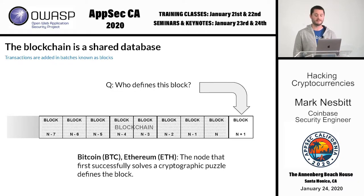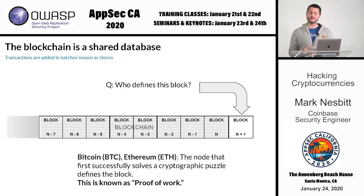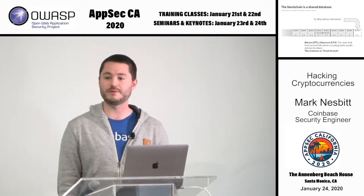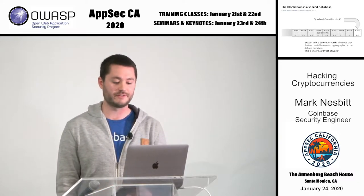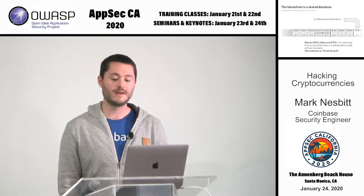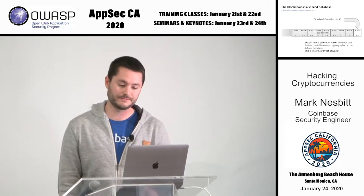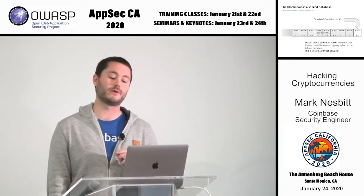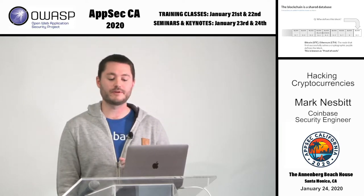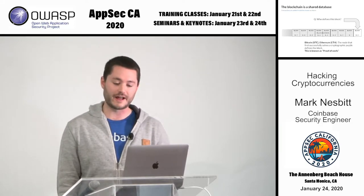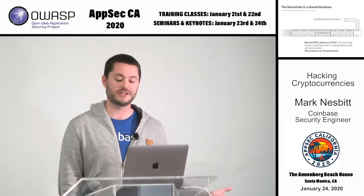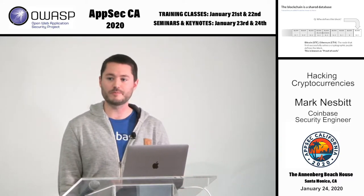And lastly, proof-of-work: Bitcoin and Ethereum. The node that first successfully solves a cryptographic puzzle defines the block. It's known as proof-of-work because the solution to this puzzle has to be brute forced, which takes considerable computational effort. This is called mining. Mining a block is when a node successfully discovers the solution to the proof-of-work puzzle. A key fact about proof-of-work networks: anyone can bring their computation to the table, and if they produce a valid block, they have extended the blockchain. If you can do the work, you can play the game — no permission required.